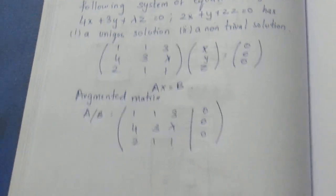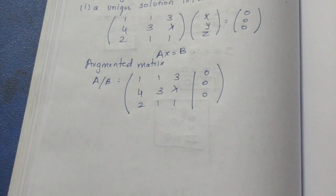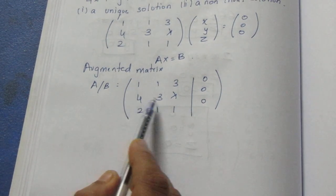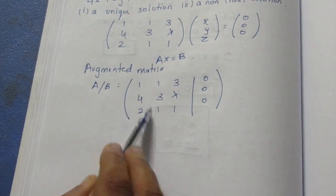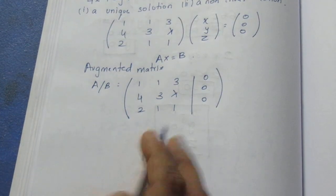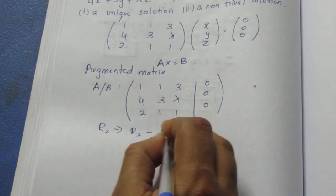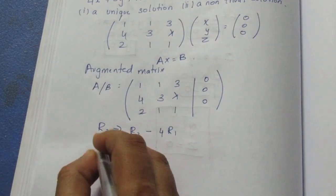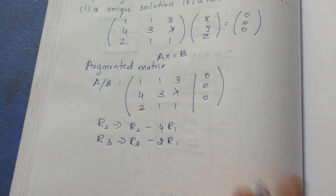Now we can write the conditions for a unique solution. We will perform row operations to change the rank. Applying rho 2 minus 4 into rho 1, and rho 3 minus 2 into rho 1, the leading entries below the first row become zero.